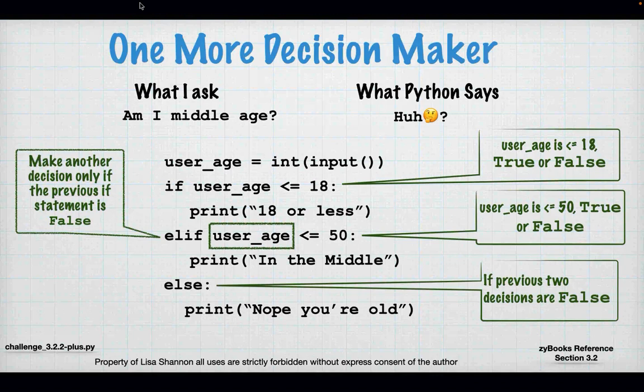You have to understand that these are mutually exclusive. Mutual exclusivity means if one thing happens the next thing won't. In Python, an if is mutually exclusive from its elif and else. An elif is mutually exclusive from an if and an else. An else is mutually exclusive from anything above it.